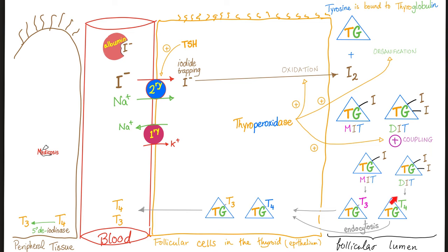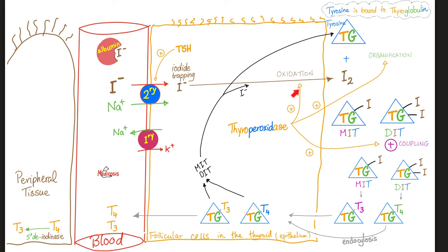Triiodothyronine (T3), tetraiodothyronine (T4). You take those and put them in the bloodstream so that they can boost your metabolic rate. The three steps are: oxidation, organification, coupling — and the hero is thyroperoxidase.